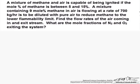We have a mixture that contains 9 mole percent methane in air, so that's a flammable mixture flowing at a rate of 700 kg per hour. We want to dilute it with pure air to reduce the methane to the lower flammability limit—in other words, 5 percent. Again these are mole percents. Find the flow rates of the air coming in and the exit stream, and finally find the mole fractions of N2 and O2 exiting the system.